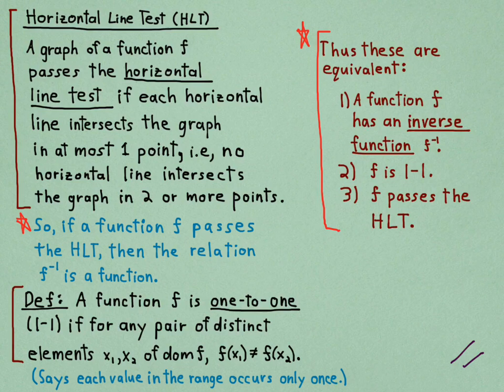So if one of these is true, then the rest of them are true. If one of these is false, then the rest of them are false. That's what it means to be equivalent.